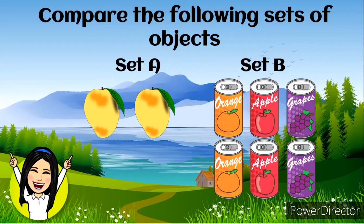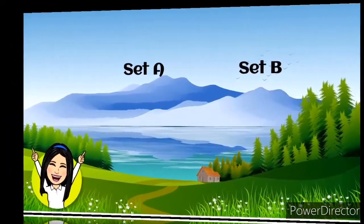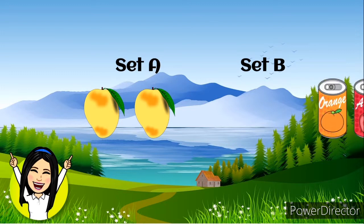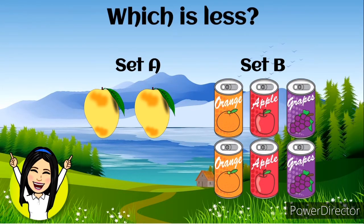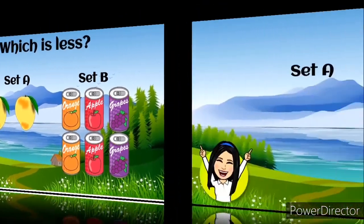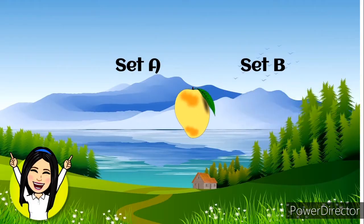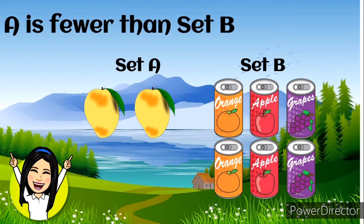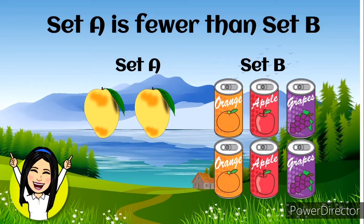Set A has two mantos and set B has six pieces of fruit juices. Which is less? I know you've got an idea. Set A is fewer than set B. Why? Because we only have two mantos in set A and six pieces of juices in set B.